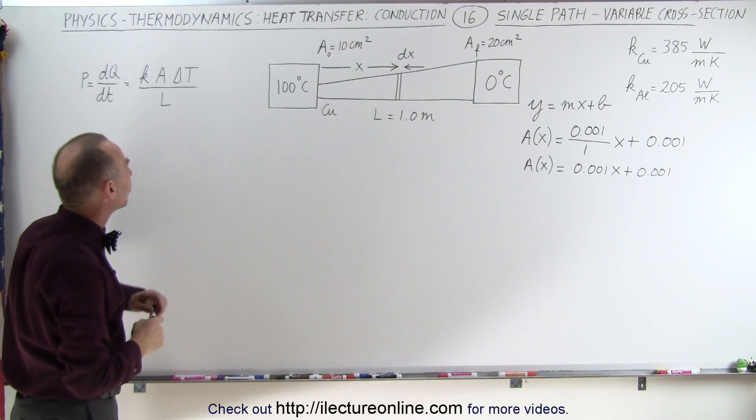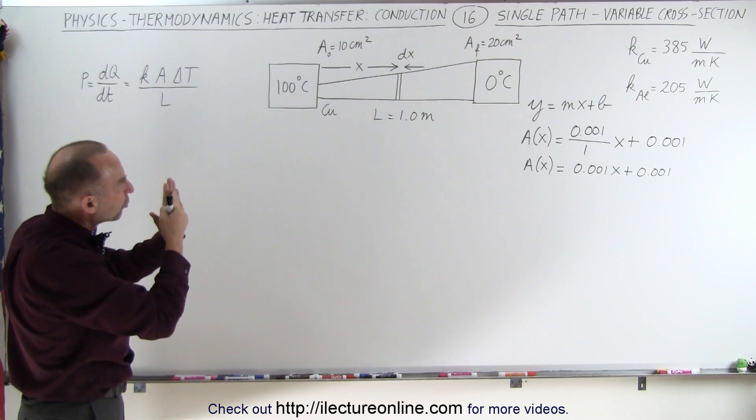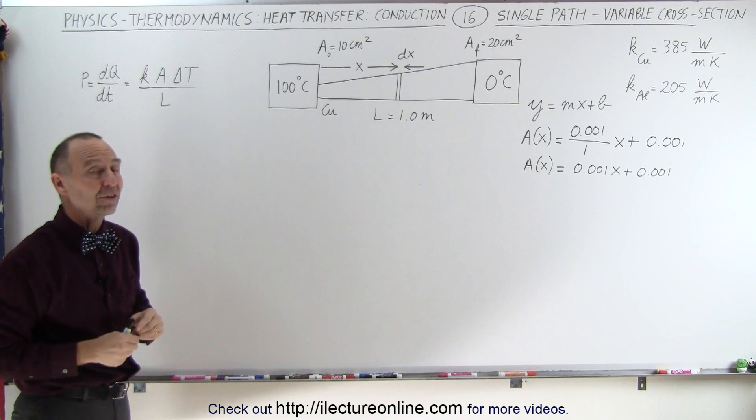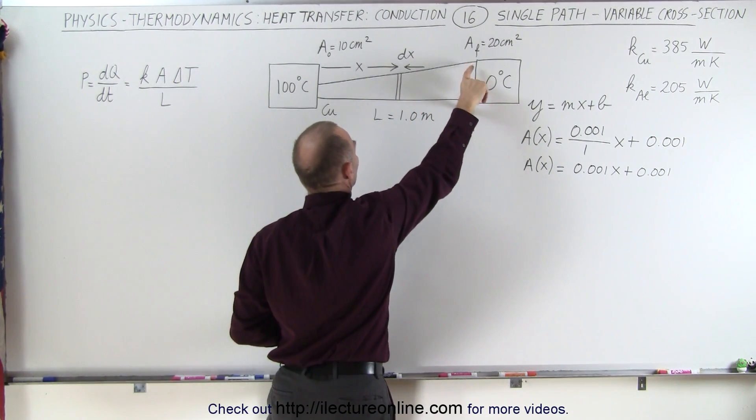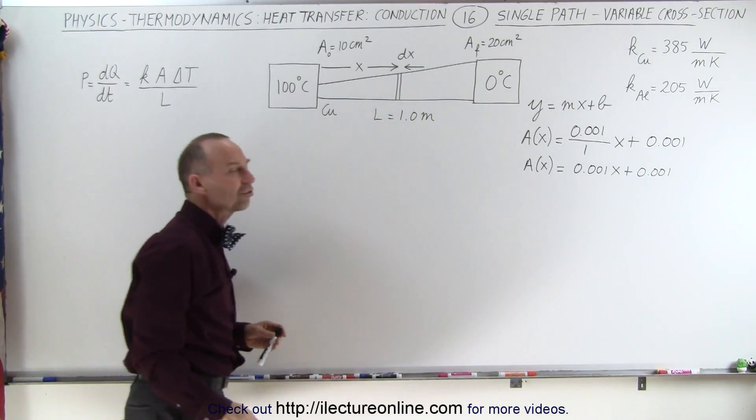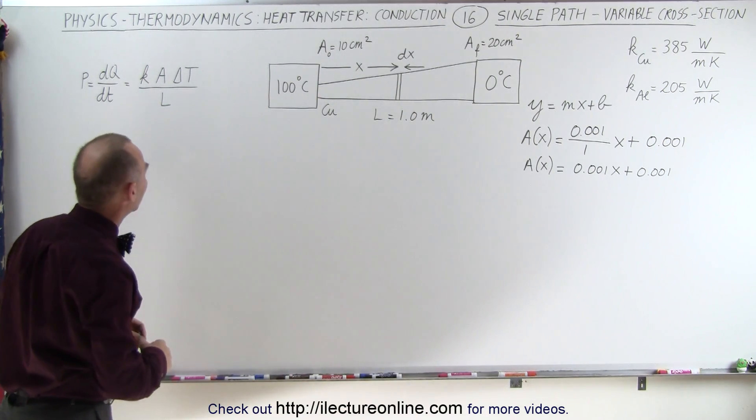The next thing that changes is that the difference in the temperature per unit distance traveled is not a constant. Because the conductivity pad gets larger here, you're going to have a variable change in the temperature as a function of position.